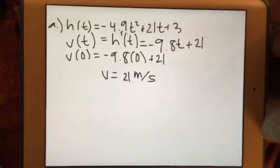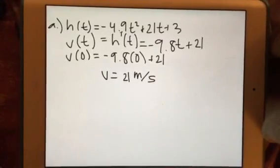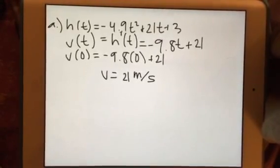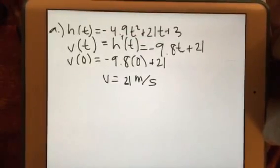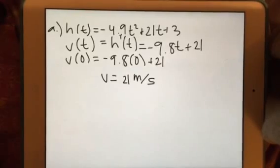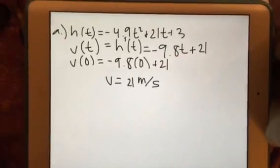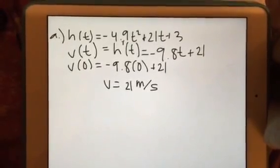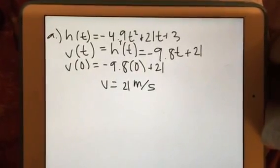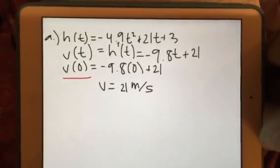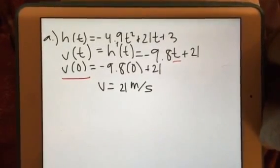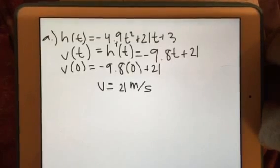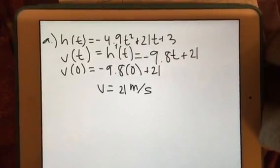Part a asks us to find the starting velocity. To find that, we need the velocity equation, which is the derivative of the height equation. So the velocity equation is v(t) = -9.8t + 21. To find the starting velocity, we find the velocity when time is 0, because that's at the beginning. Plugging in 0 for t, we get v(0) = 21 meters per second.